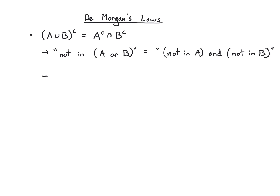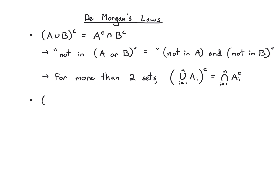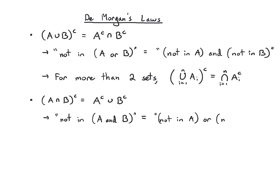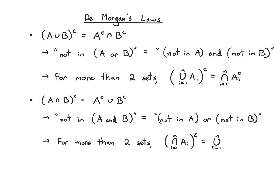For more than two sets, exactly the same thing happens. I take the complement of the union from A1 up to AN, and I get the intersection of complements from A1 complement up to AN complement. You can also take the complement of the intersection to get the union of the complements — so 'not in A and B' becomes 'not in A or not in B.' Applied to more than two sets: the complement of the intersection from 1 to N gives the union of the complements from 1 to N.